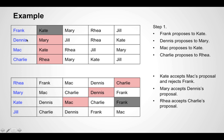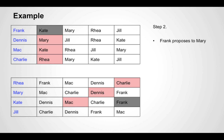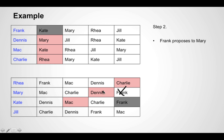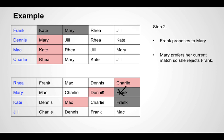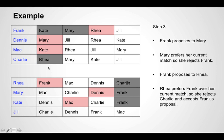At the end of round one, Dennis, Mac, and Charlie are paired, but Frank is unpaired. In step two, Frank proposes to the next woman on his list — Mary — but Mary is already paired with Dennis and she prefers Dennis over Frank, so she rejects Frank's proposal. In step three, Frank proposes to Rhea, who is currently paired with Charlie. But Rhea prefers Frank over Charlie, so she rejects Charlie and accepts Frank's proposal. At the end of step three, Frank, Dennis, and Mac are paired, but Charlie is unpaired.